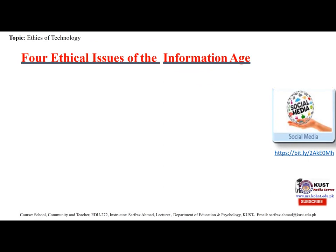There are four ethical issues of the information age. These basically include accuracy of information, accessibility of information, ownership of information, and IT implies occupational health and safety, and quality of life. These factors can affect information system quality such as reliability and security.